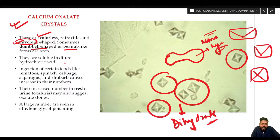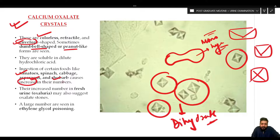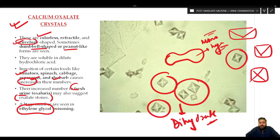Calcium oxalate crystals are soluble in dilute hydrochloric acid. Ingestion of certain foods like tomatoes, spinach, cabbage, asparagus, and rhubarb can cause their increase in numbers. Increased number in fresh urine may also suggest the presence of oxalate stones. A large number are seen in ethylene glycol poisoning. If their amount is excessive and consistently present, they might suggest an underlying disorder.